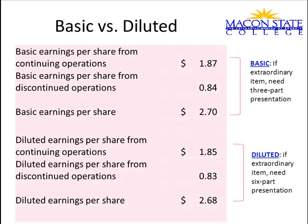Here is the six-part presentation. If you have an extraordinary item, you must show it separate from the subtotal before and the final total after the extraordinary item. Discontinued operations is the most common kind of extraordinary item, and that's what's shown here for ADP for 2006.